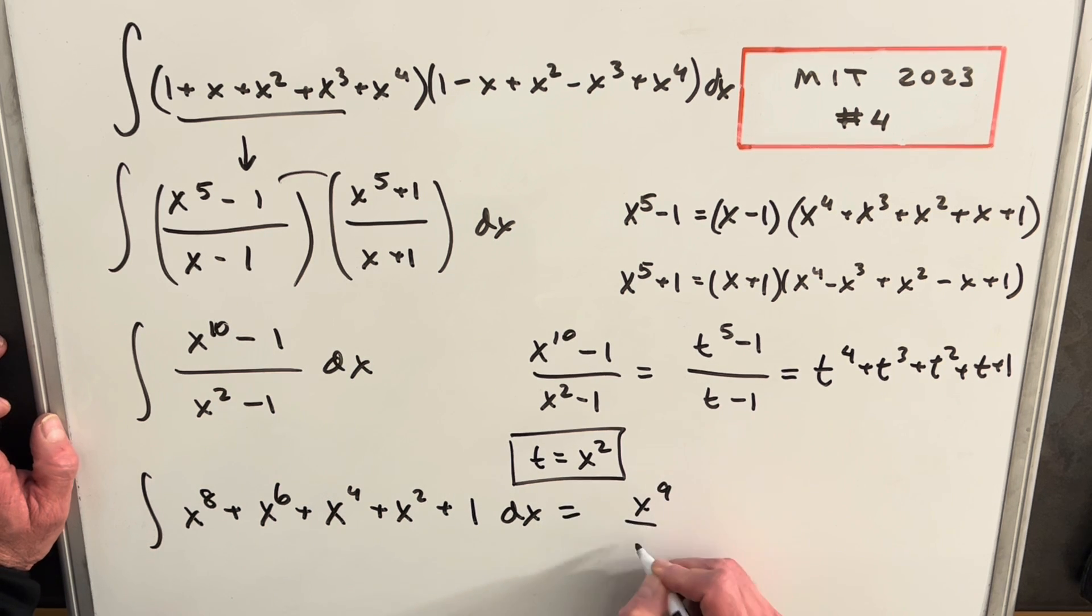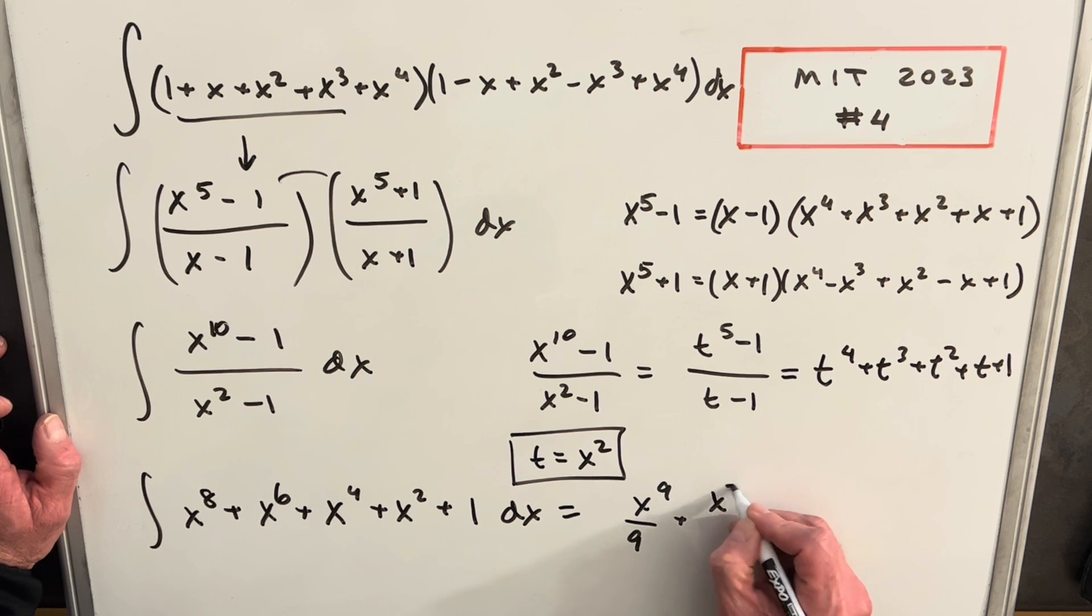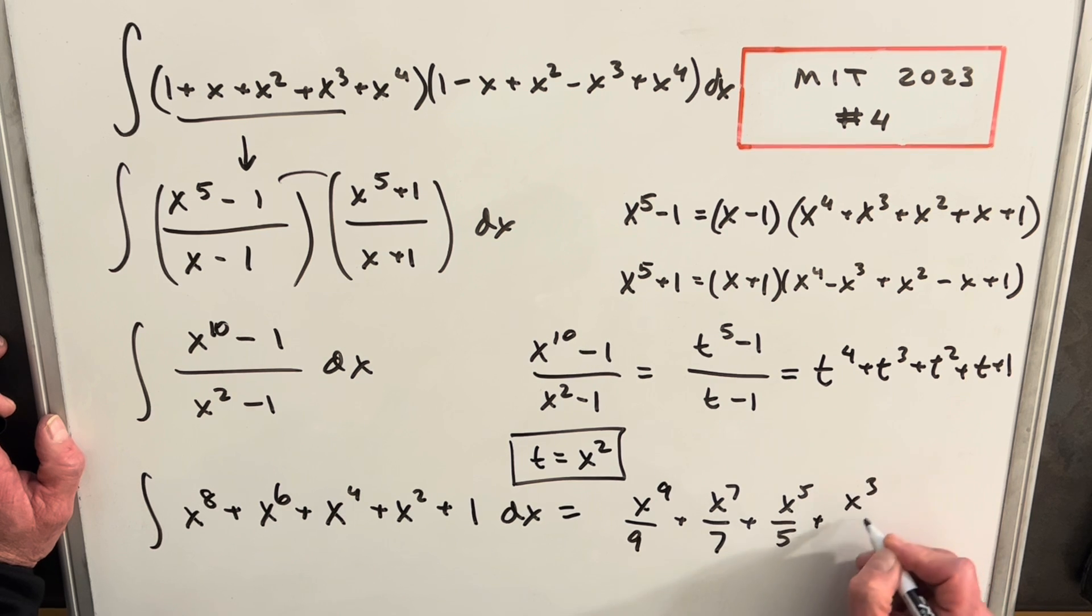So we're going to have x⁹/9 + x⁷/7 + x⁵/5 + x³/3 + x + C.